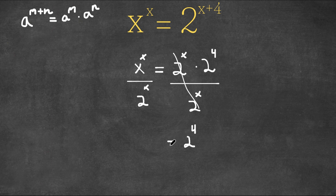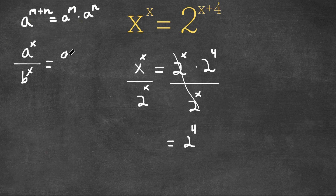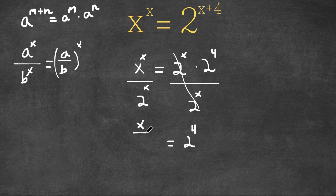And for our left side, if we have a to the power of x over b to the power of x, this can also be written as a over b to the power of x. So we have x to the power of x over 2 to the power of x, which can also be written as x over 2 to the power of x.